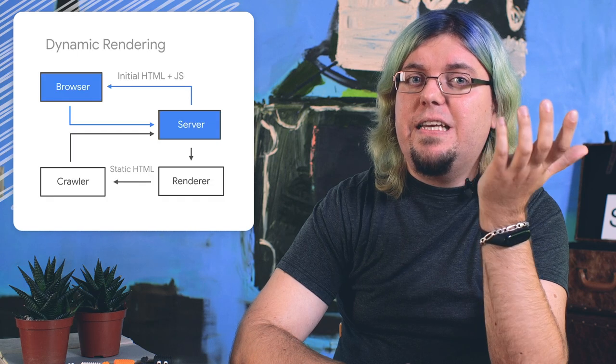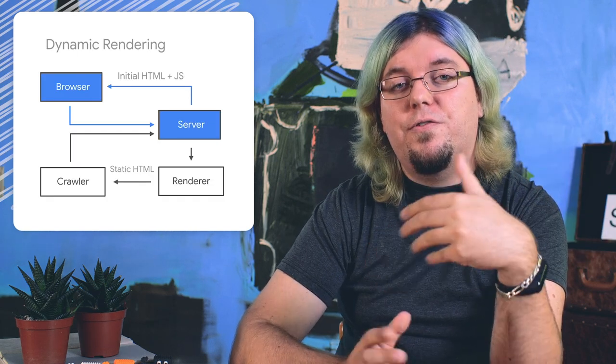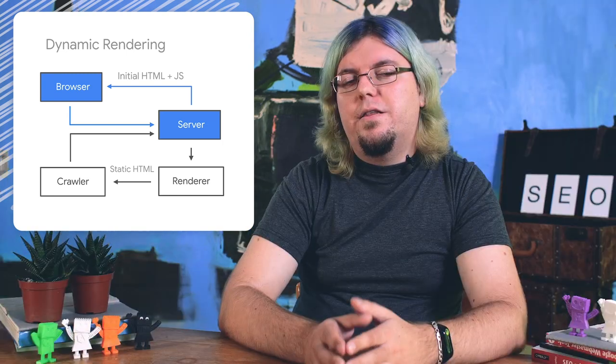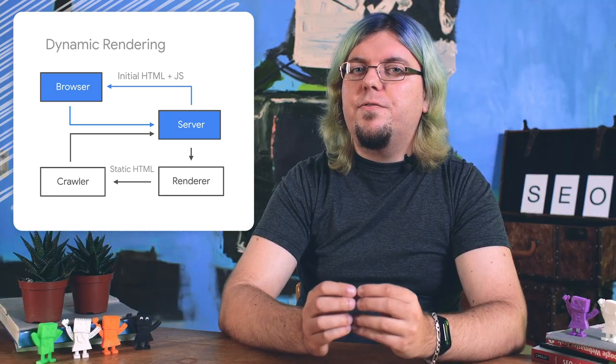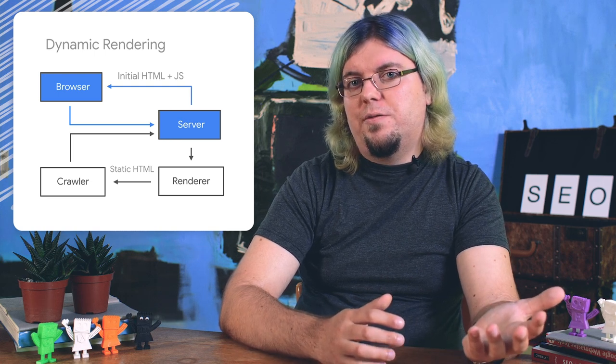But wait, what is dynamic rendering? It is a technique where you switch between client-side rendered content and pre-rendered content for certain user agents. This is useful because you can deliver the full client-side rendered experience to users while getting as much content as possible to crawlers such as Googlebot. As discussed earlier in the series, that means your content is crawled and indexed without needing to execute JavaScript first.